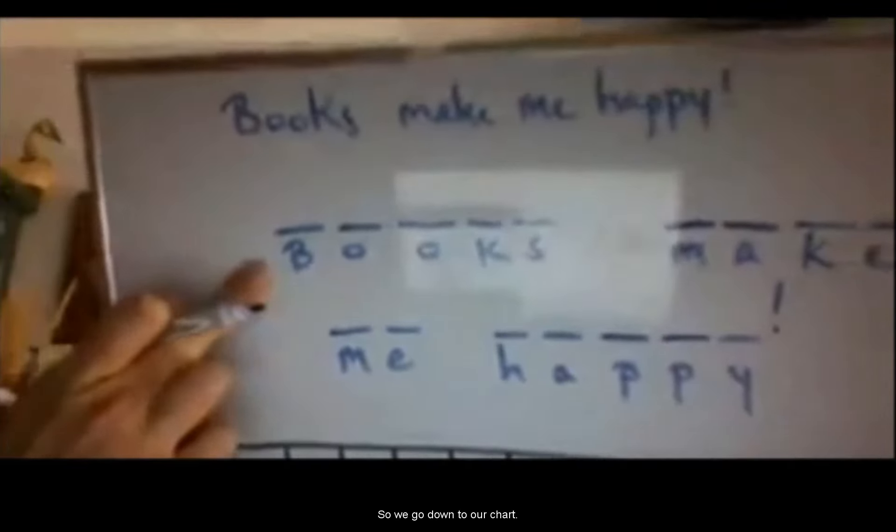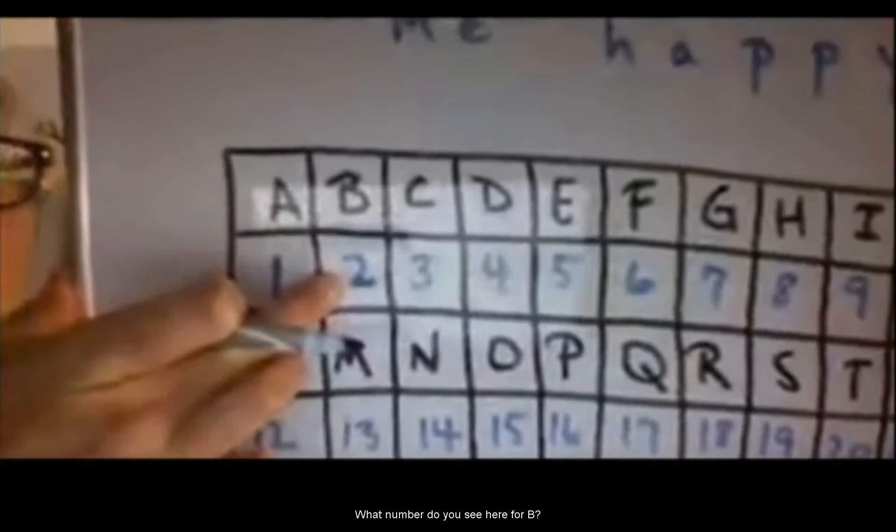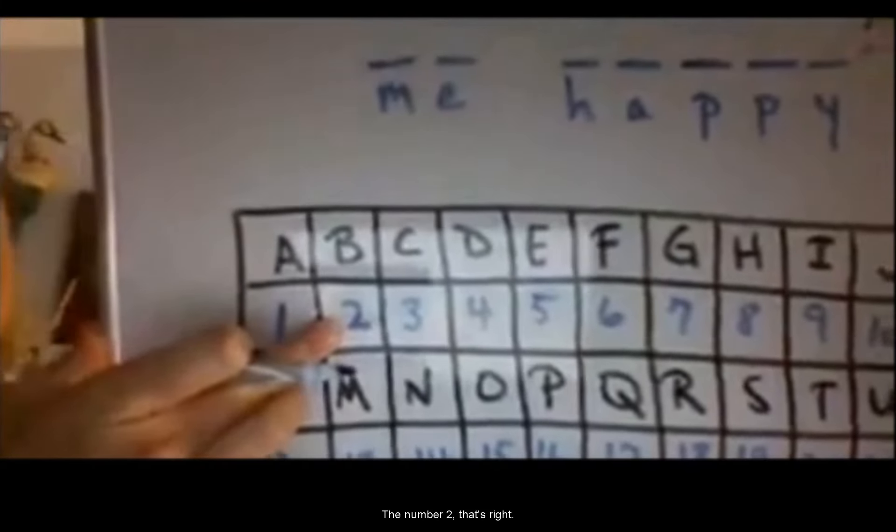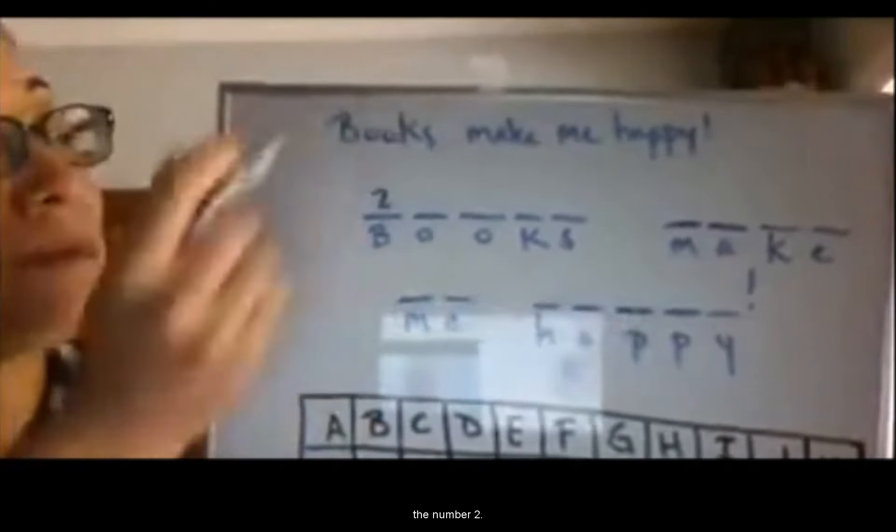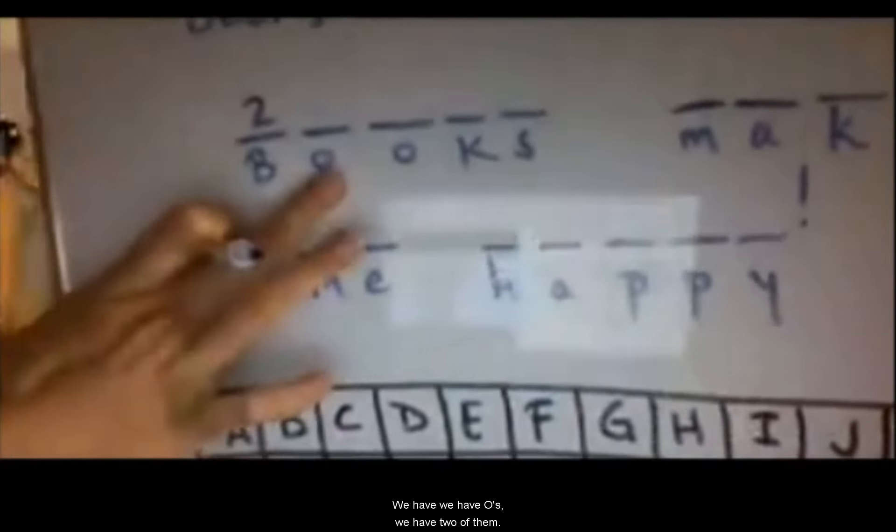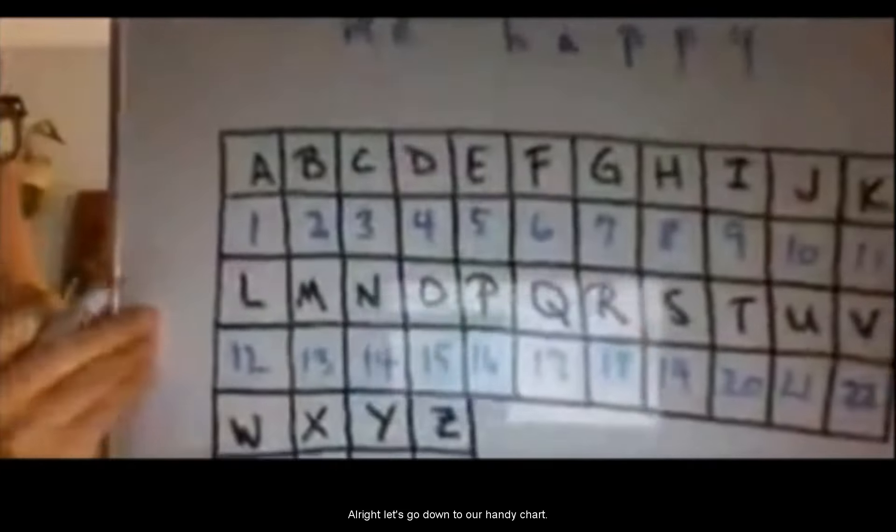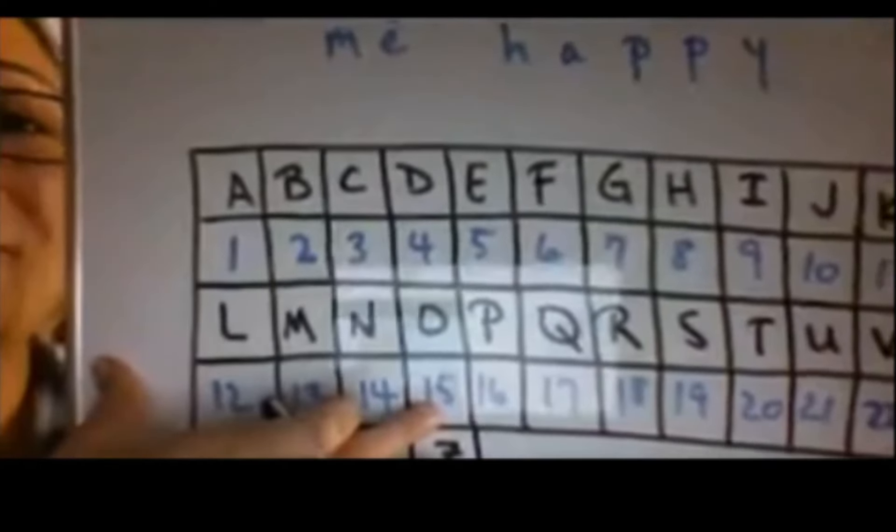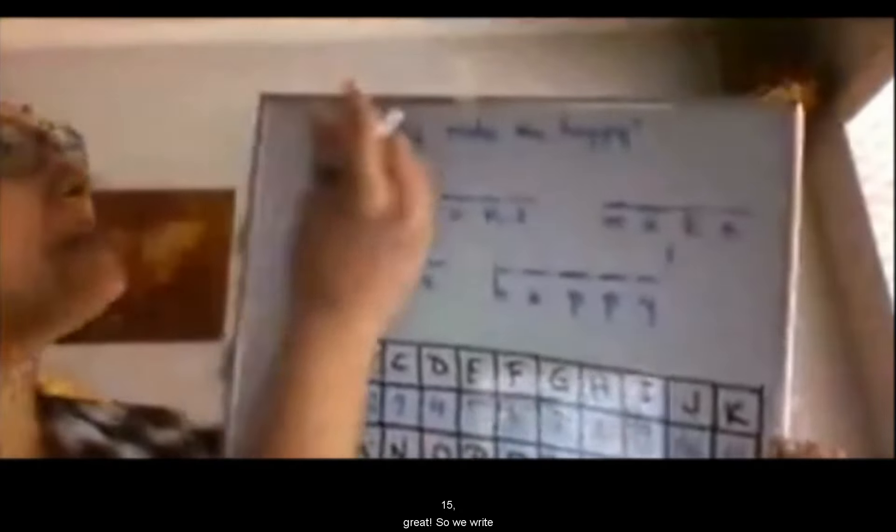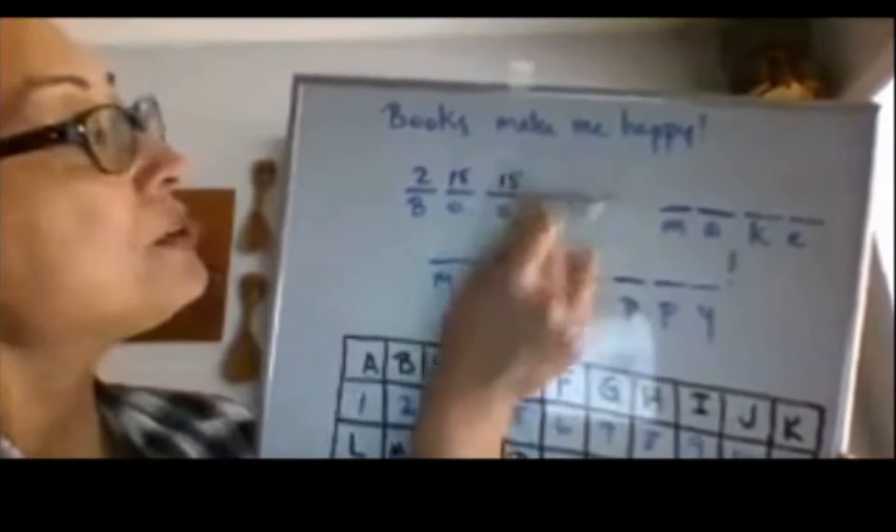First letter is what? Right, B. So we go down to our chart. What number do you see here for B? The number 2. That's right. So up here, we write the number 2. What's next? Oh, we have O's. We have two of them. All right, let's go down to our handy chart. Here's O. What number do you see? 15. Great. So we write 15 and 15 again.